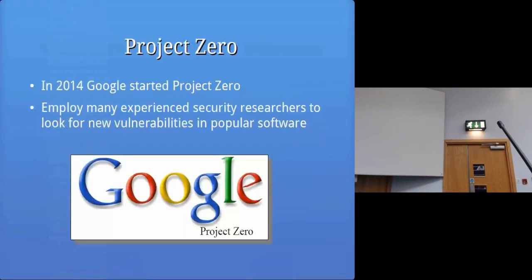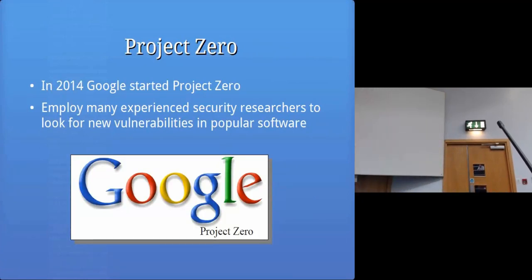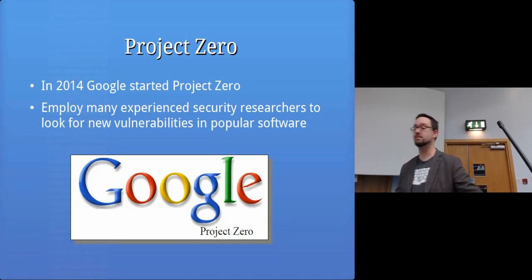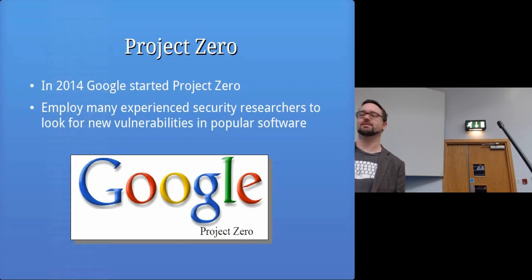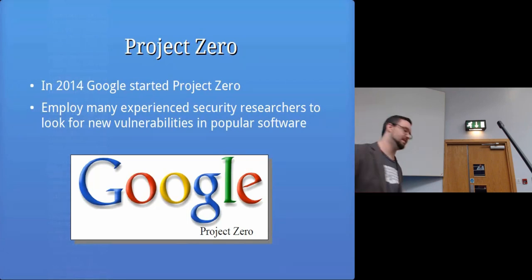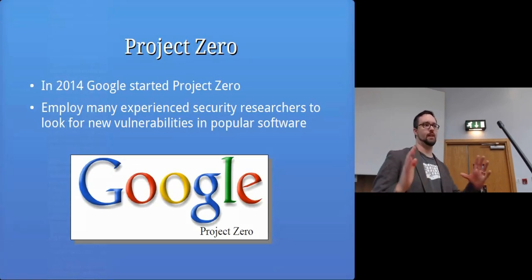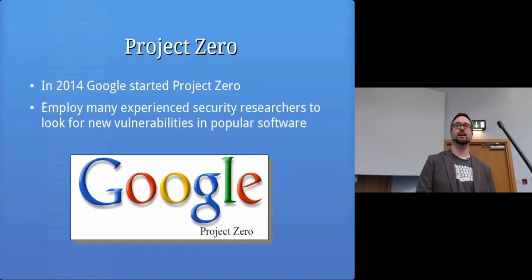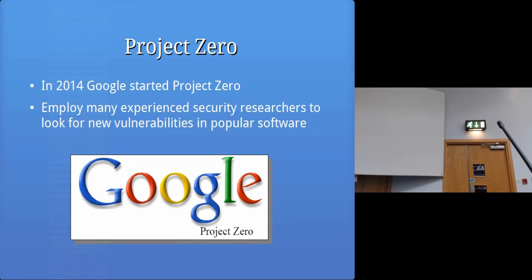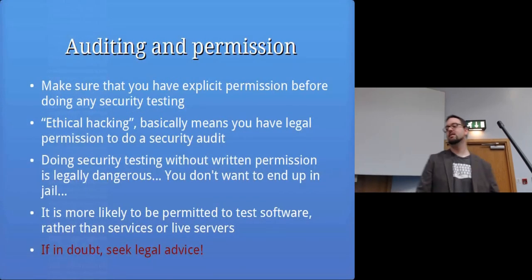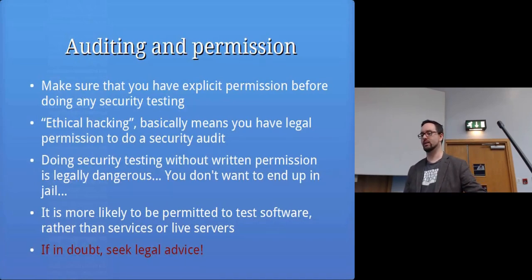The NSA receives details about new zero days — Microsoft gives the NSA details about all new zero days they find. Google's Project Zero, started recently, hires researchers to find new vulnerabilities. They had clashes with Microsoft because they released information publicly that Microsoft didn't have time to fix. Google's policy is 90 days — Microsoft complained it wasn't long enough and asked for a two-day extension, which was denied. They went public and it was only two days before Microsoft released the patch.